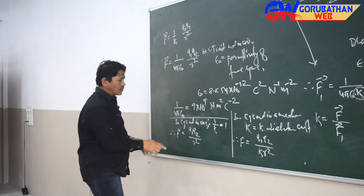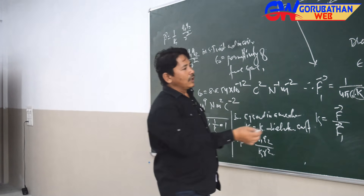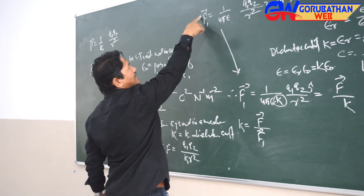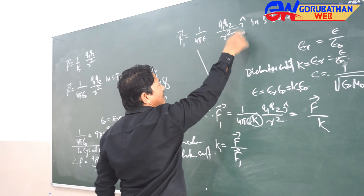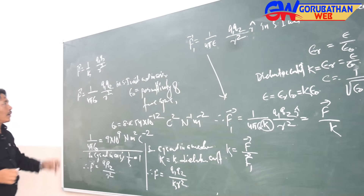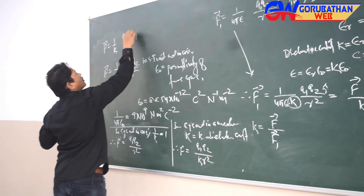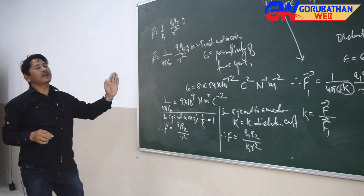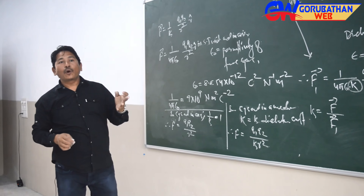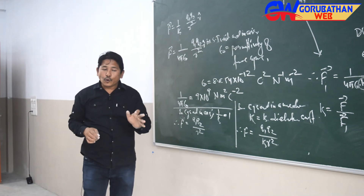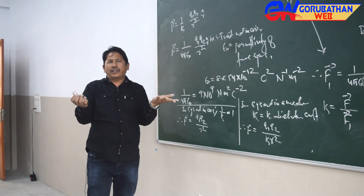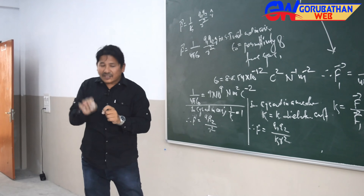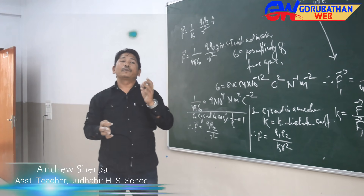To summarize: electric intensity is the force experienced by a unit positive charge placed at that point. The unit positive charge is taken as a standard. The next quantity that describes the field is electric potential.